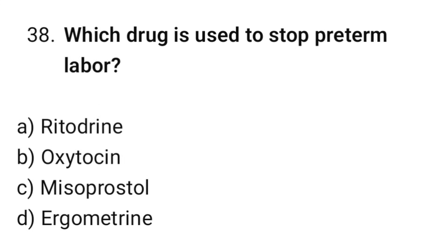Question number 38: Which drug is used to stop preterm labour? The correct option is A: Ritodrine.